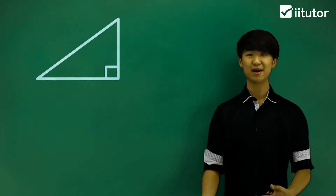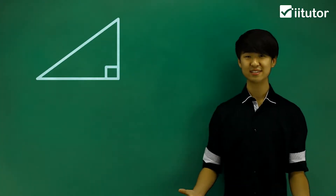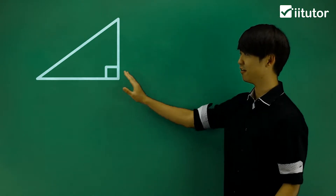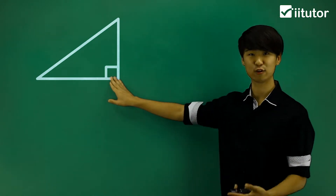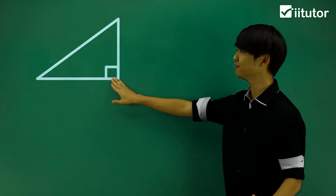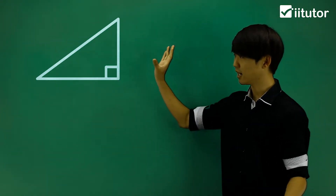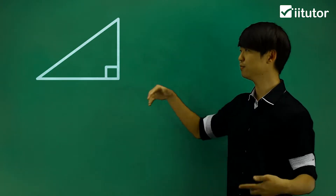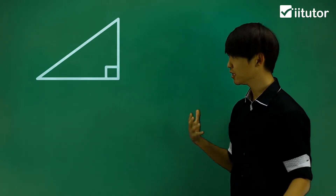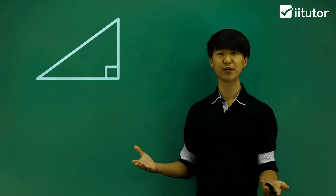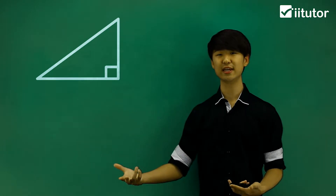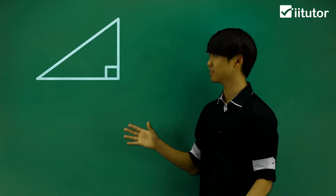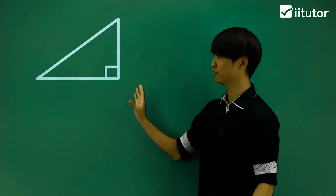We're going to be learning about the basics of trigonometry. We're going to be focusing on a right-angled triangle for now, and we're going to try and label the features of this triangle that are related to trigonometry. In trigonometry, it's about a relationship between the angles and the length of the sides.